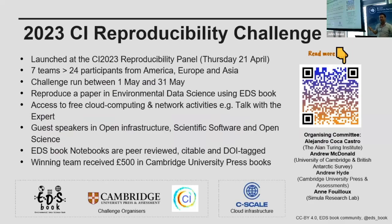Recently, we ran a reproducibility challenge with the Climate Informatics conference in Cambridge in April. Using our infrastructure, we asked participants to reproduce results from a paper published in the EDS Journal (Cambridge University Press) and submit their reports as interactive Jupyter Notebooks. Three teams completed the challenge, and their notebooks — still being finalized — will be released in the EDS Book Gallery, making the full reproducibility process visible and runnable.